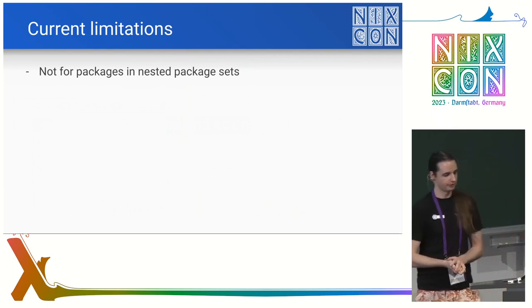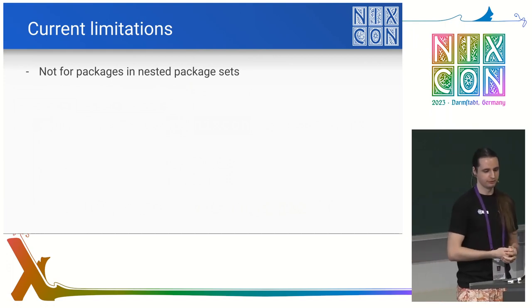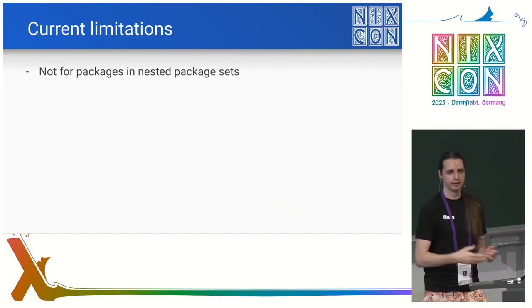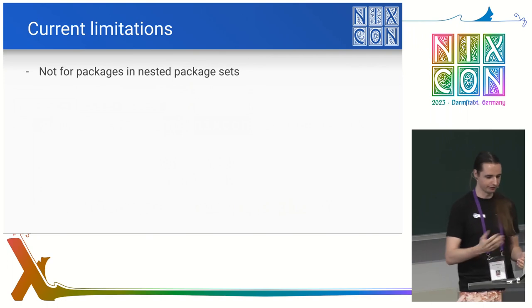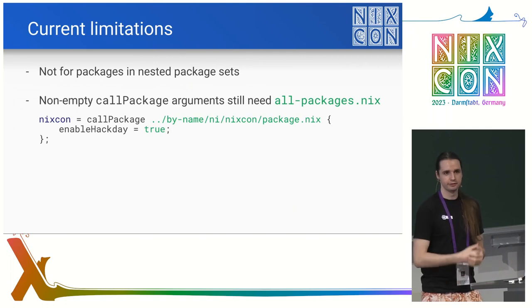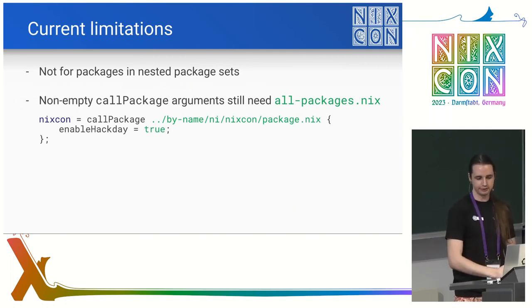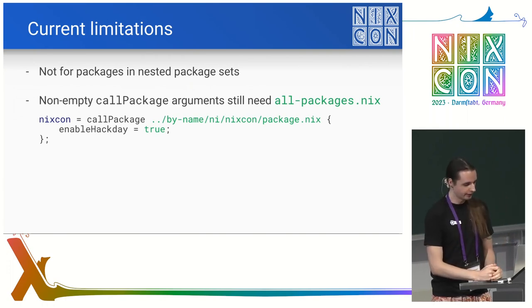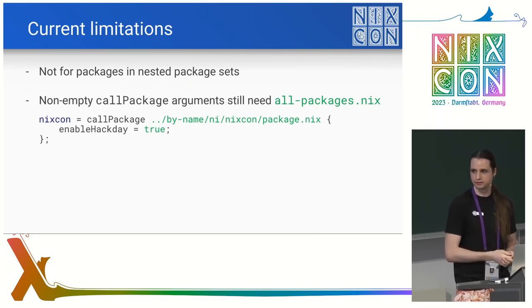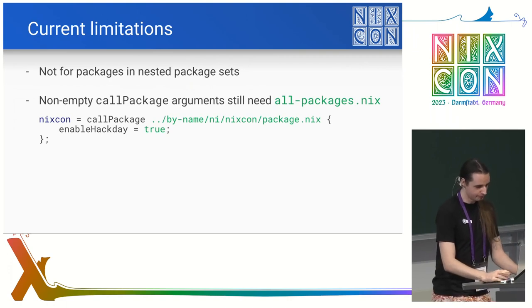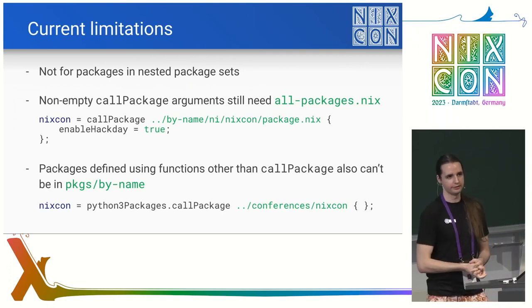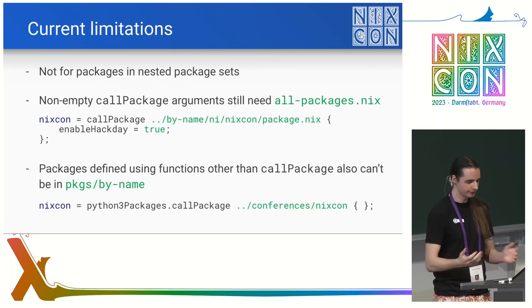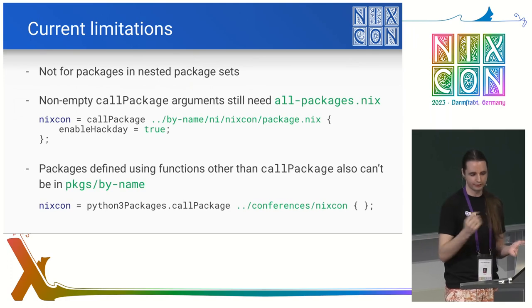There are some limitations, though we want to remove these in the future. It doesn't say anything about nested package sets, so things like Python packages or Haskell packages still have to use their own files similar to all-packages.nix. And since we use call-package with an empty argument by default, if you need to customize that argument there's no standardized way for that yet, so you still need to edit all-packages.nix. But you can use the packages-by-name structure in there. There's also the case of when you need a function other than call-package — in that case you can't use packages-by-name. Fortunately, in most cases you can refactor to not need that specialized call-package anymore.